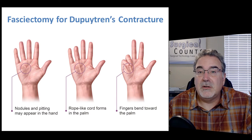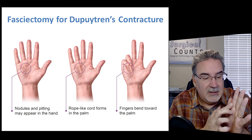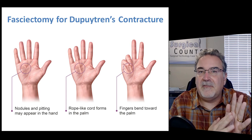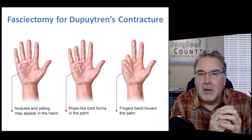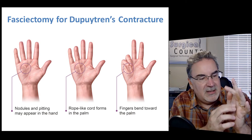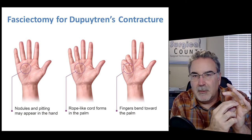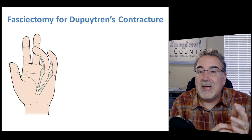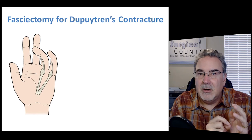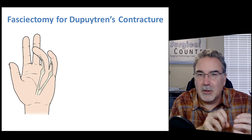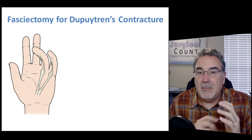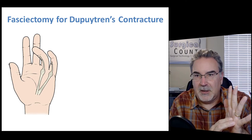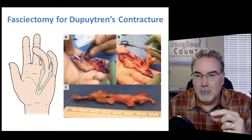Sometimes a patient comes in with a condition known as Dupuytren's contracture. In this case, the fascia — that very tough fibrous layer immediately under the skin — can start to bundle up and create a nodule that prevents the fingers from extending fully, because that tough fibrous tissue pulls the finger down. When this happens, we can go in and remove that fascia with a fasciectomy, removing the fascia that's causing the contracture. You can see the surgeon going in through the skin and removing that knotted-up piece of fascia.